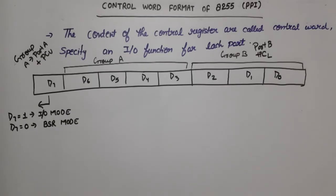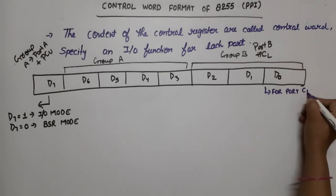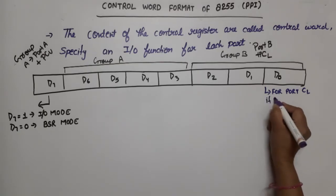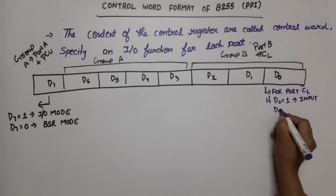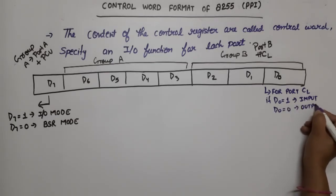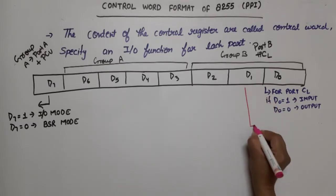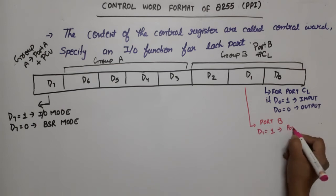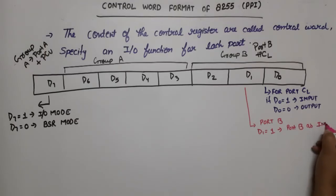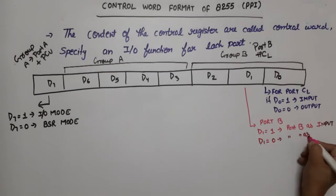D0 is for Port C lower. If D0 is equal to 1, this port will work as an input port. If D0 is equal to 0, this port will work as an output port. D1 is for Port B. When D1 is equal to 1, Port B works as input. When D1 is equal to 0, Port B works as output.